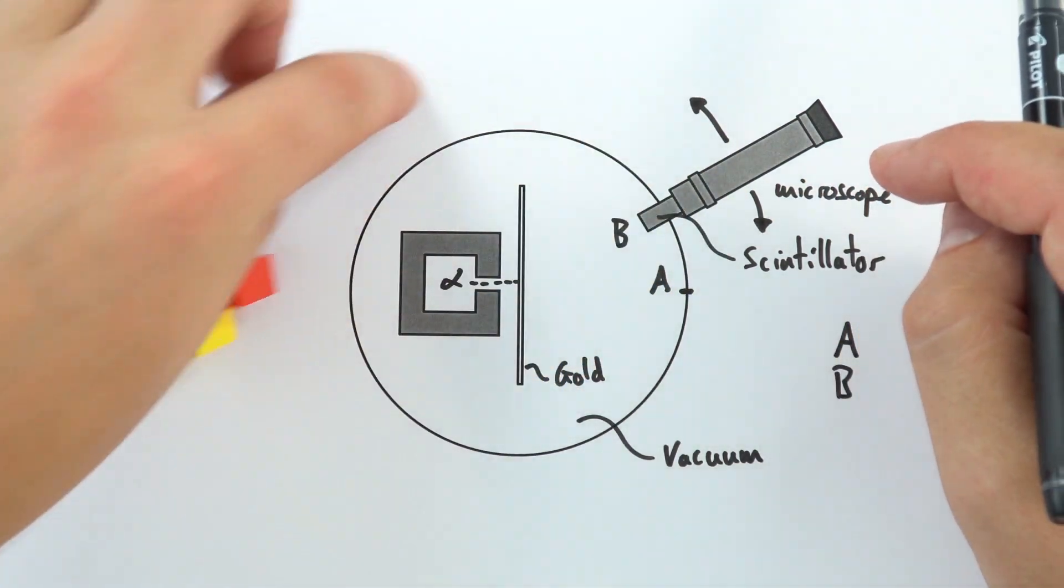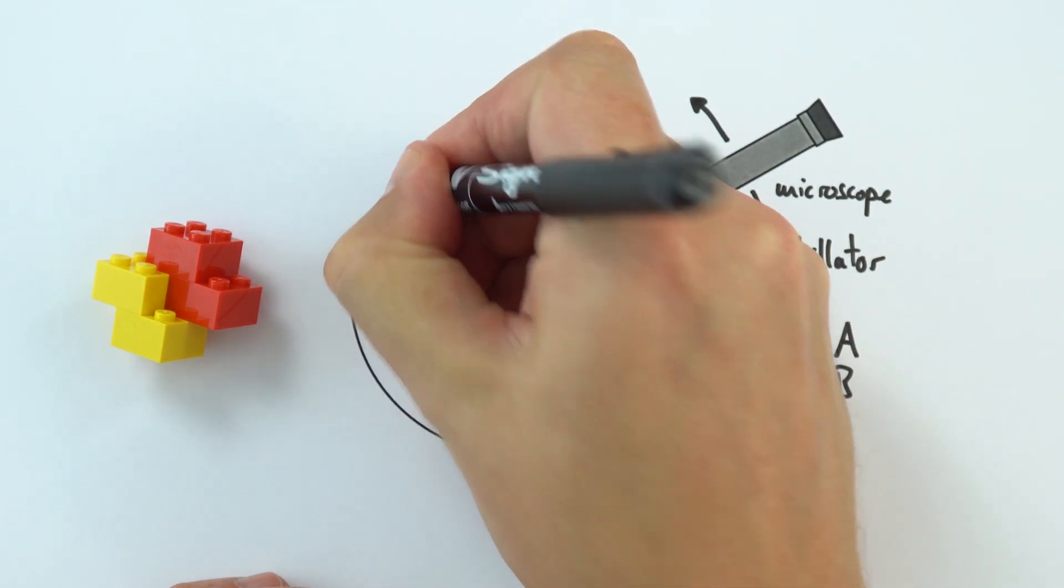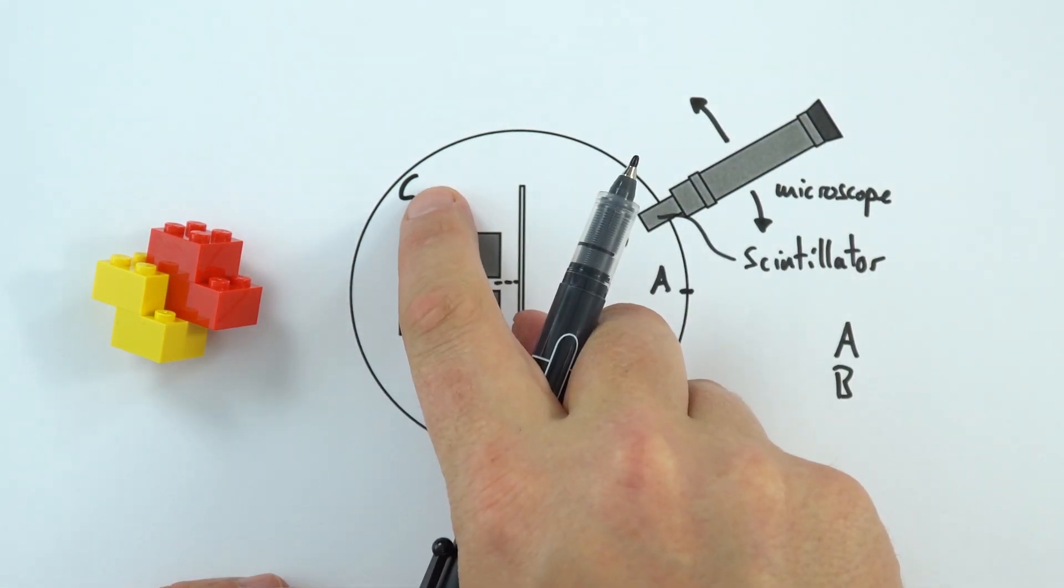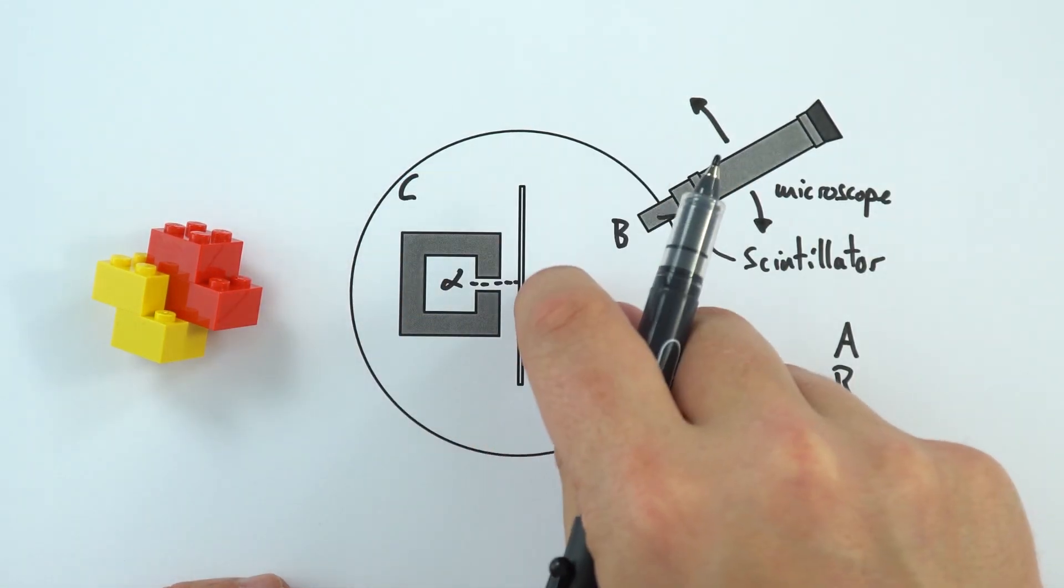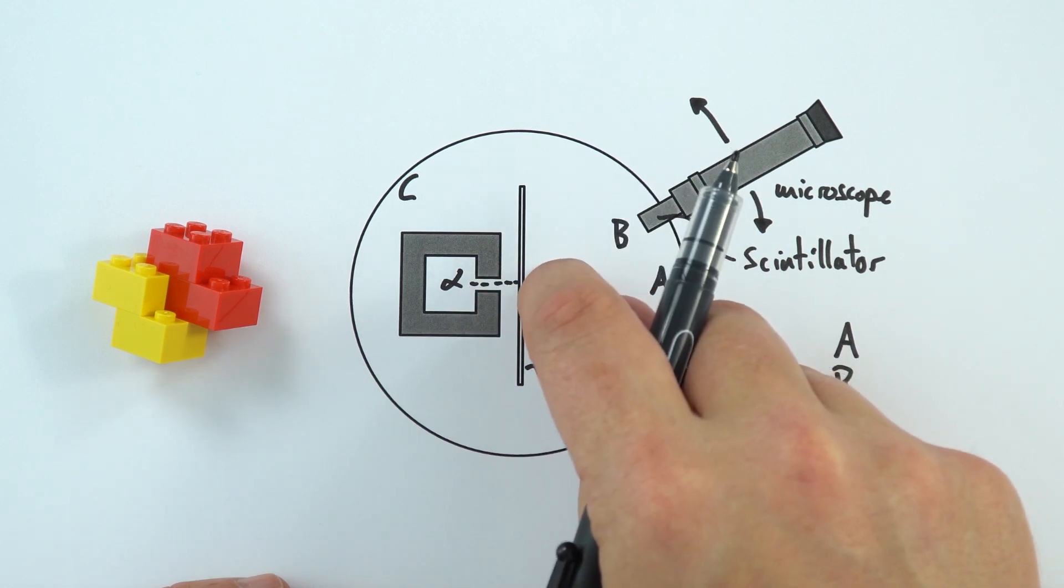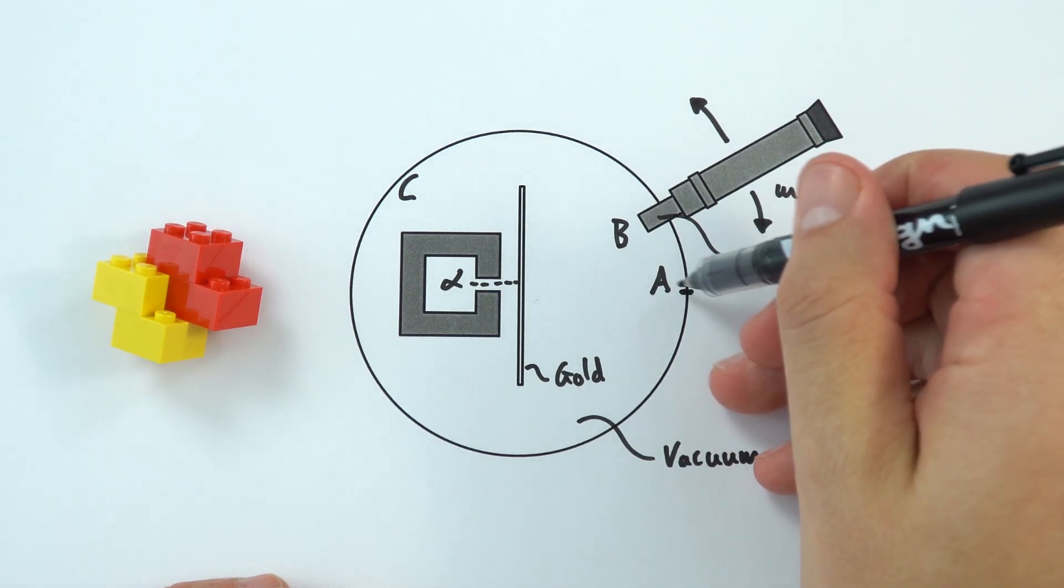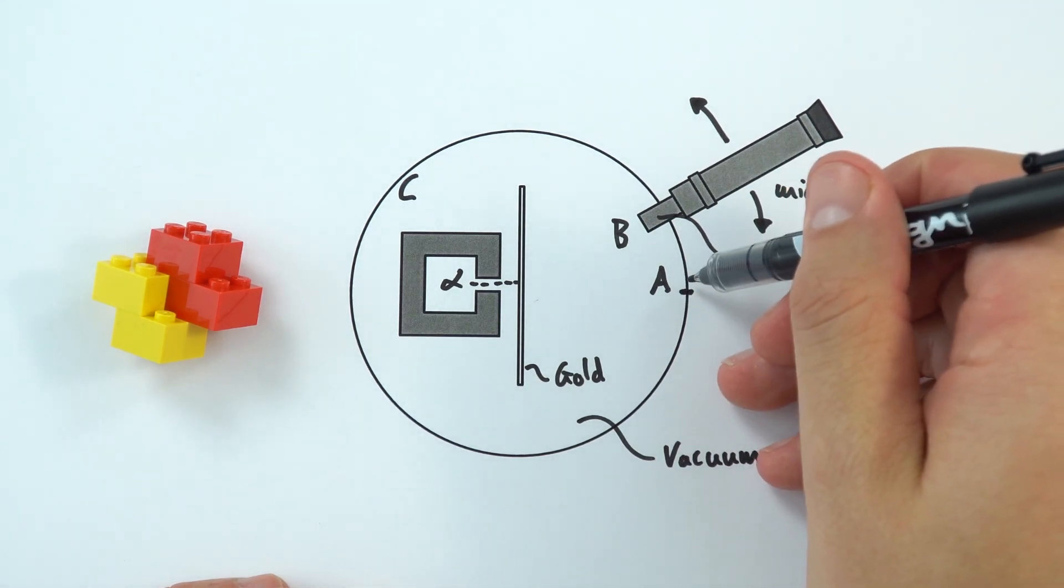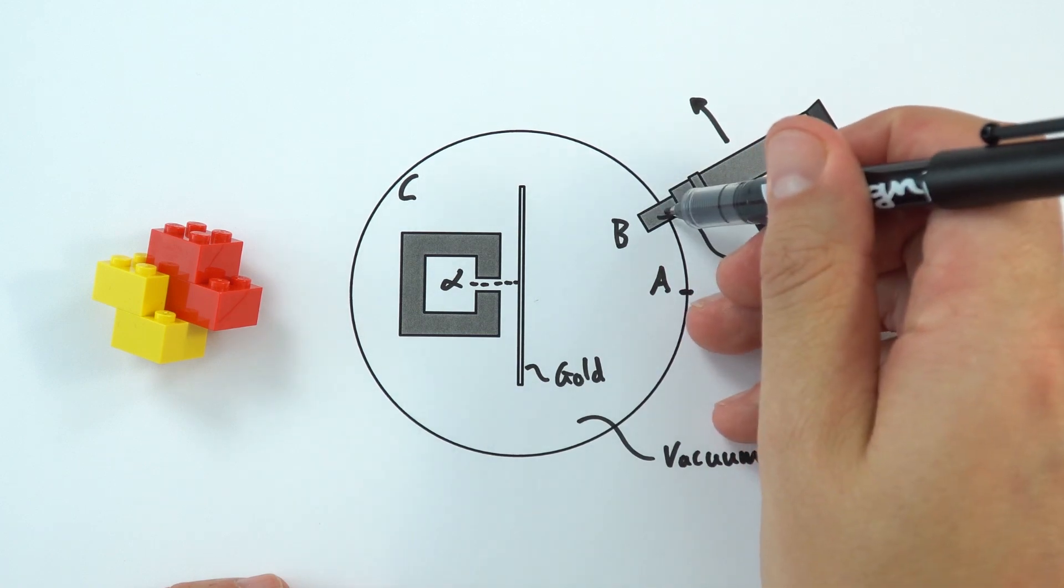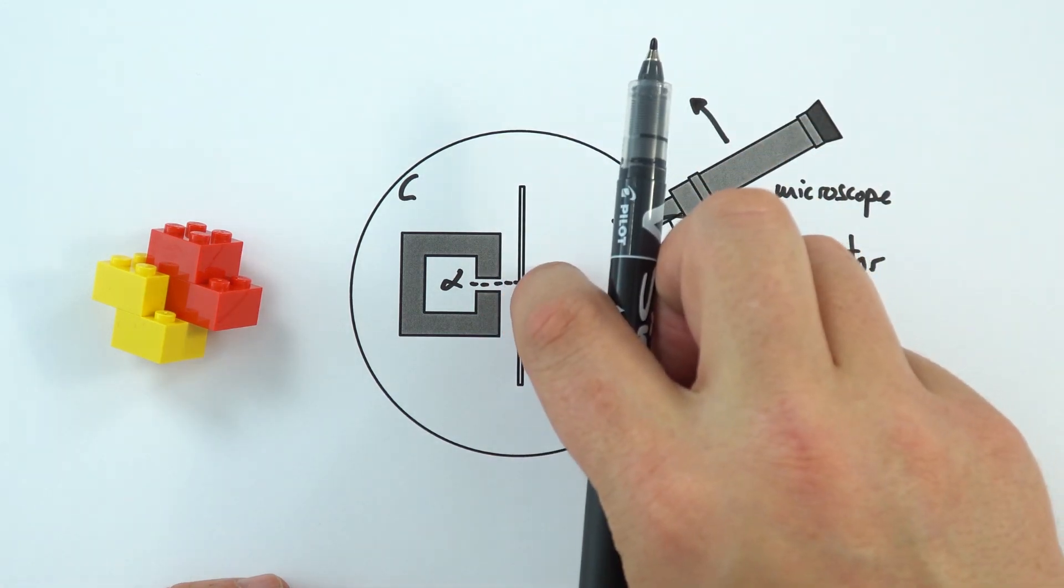But when they moved the detector round to the other side, so this is now position three, they found that even at this position here some of the alpha radiation was reflecting or bouncing off this sheet of gold leaf. So what could explain these observations? That first of all most of the alpha radiation went straight through the atom, that some of it was deflected, and then a very very small amount was deflected by more than 90 degrees.